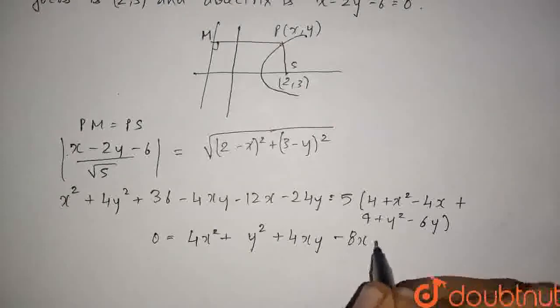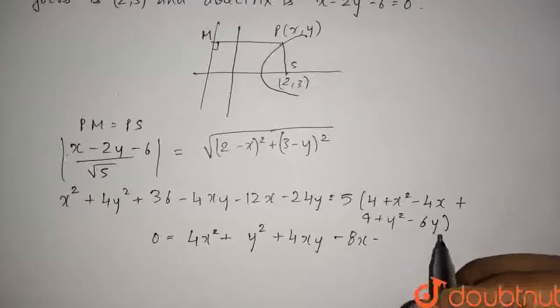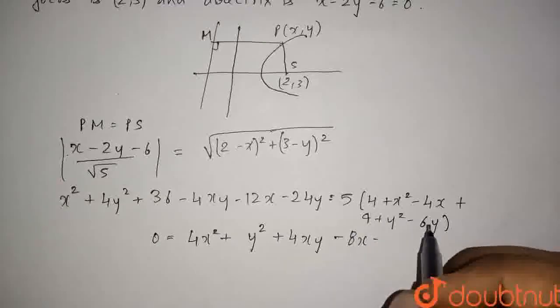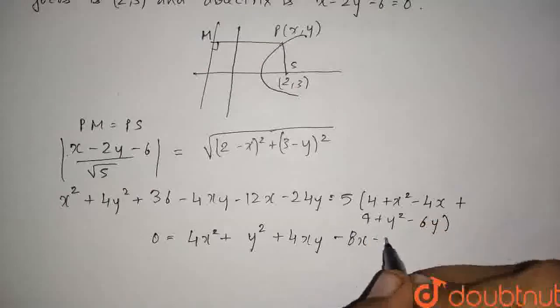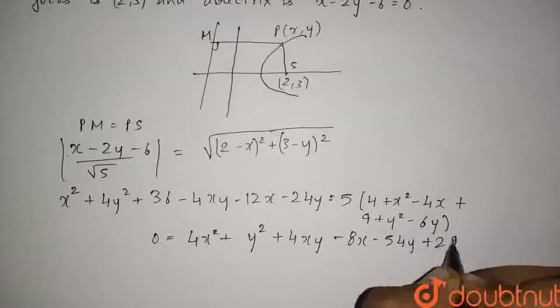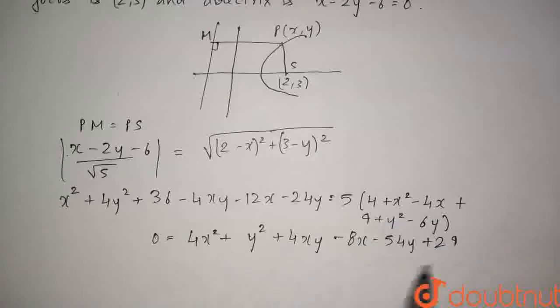Minus 8x minus, what will be the y-term? The y-term will be 54y, so 5×6=30 plus 24y is 54y plus 29. This equals 0.